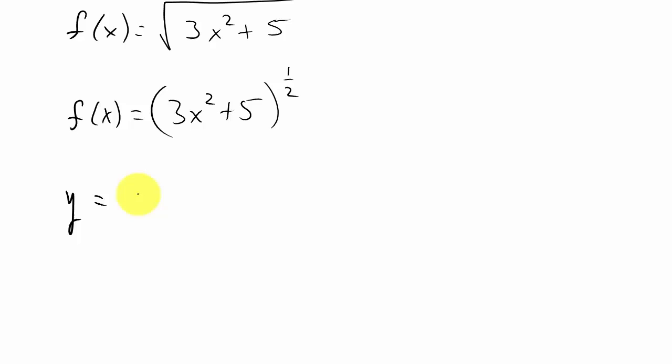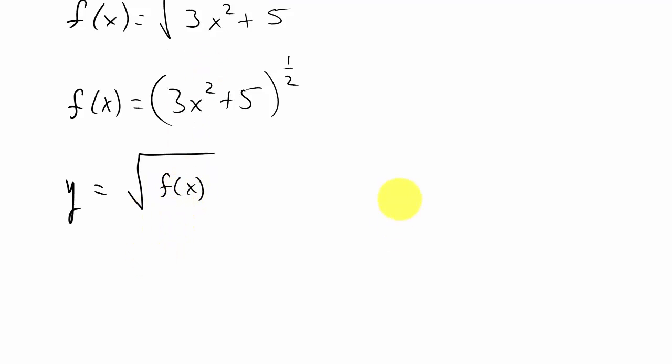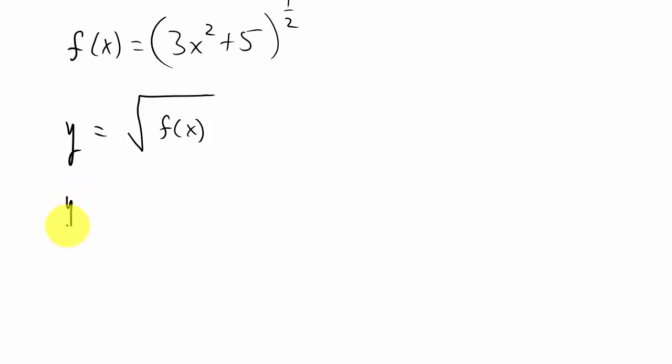So basically what we have is we have y equals the square root of some function. You see this 3x squared plus 5, that would be this f(x) here. So what you've learned to do is say...